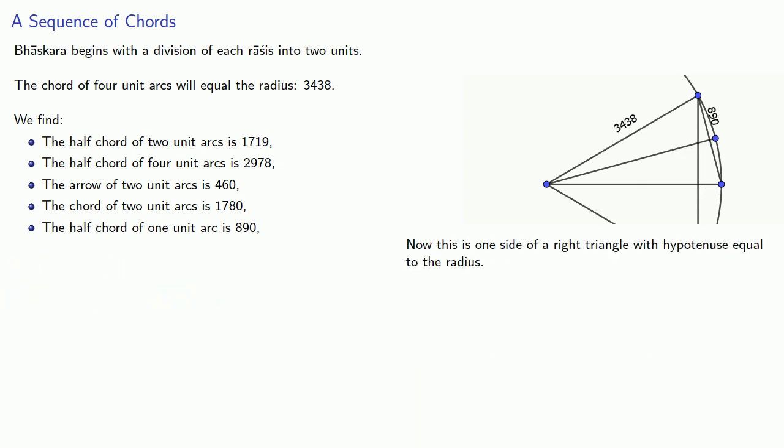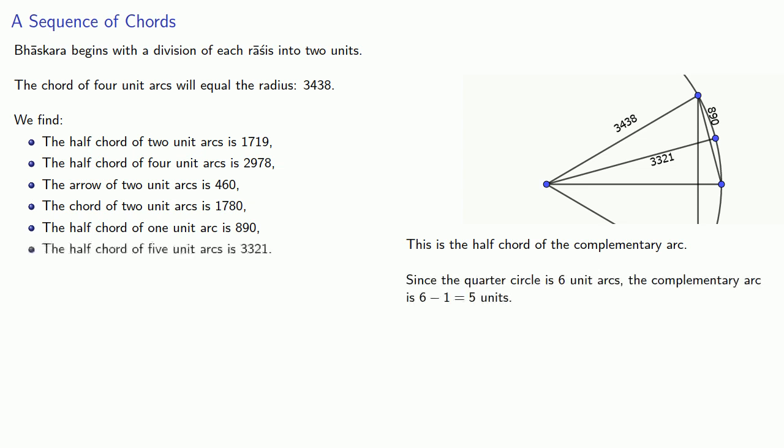And again, this is one side of a right triangle with hypotenuse equal to the radius. And so we can find the other side. And this is the half-chord of the complementary arc. And again, since the quarter circle is six-unit arcs, the complementary arc is going to be five units. And so now we know the half-chord of five-unit arcs.